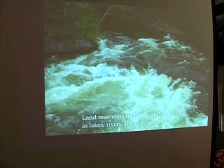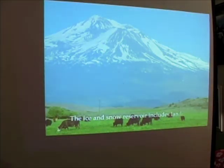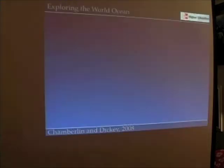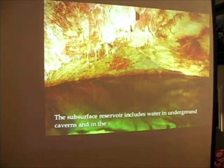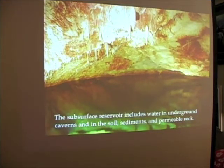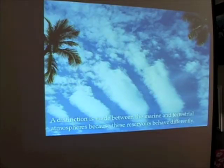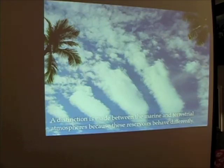Land reservoirs include surface waters in lakes, rivers, streams, and ponds. The ice and snow reservoir includes land-fast ice, glaciers, snow, and permafrost — this is Mount Shasta, perhaps some of you have visited there. Underground water includes water in underground caverns, soil, sediments — the water essentially beneath our feet. And water in the sky includes the terrestrial and marine atmosphere. Because the atmosphere over the ocean behaves differently than the atmosphere over land, we make a distinction between those two reservoirs.